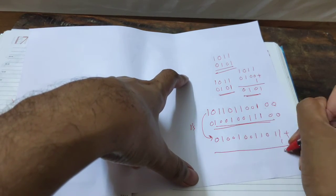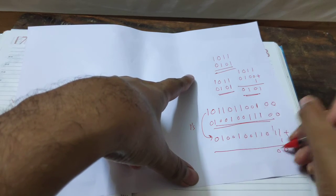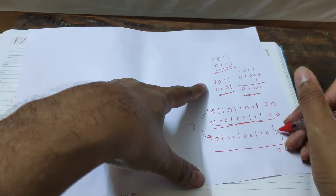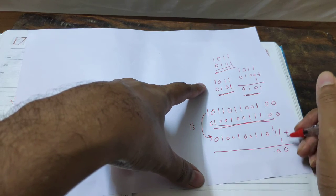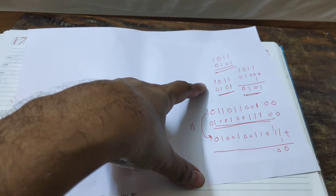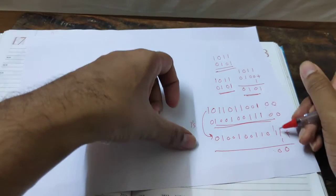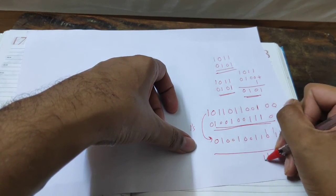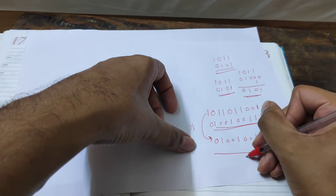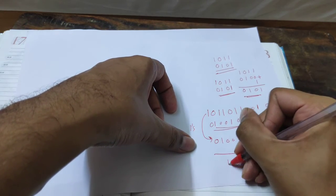And we are adding 1. 1 plus 1 is 0, 1 plus 1 carry, 1 plus 1 carry... The result is 1, 1, 1, 1, 0, 0, 1, double 0, 1, 0.